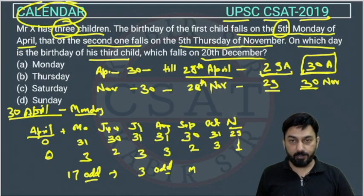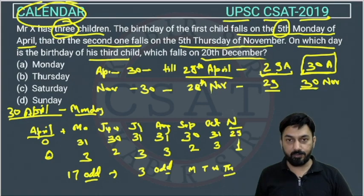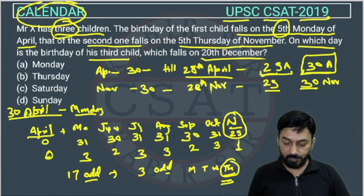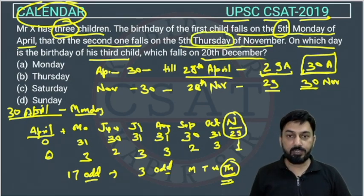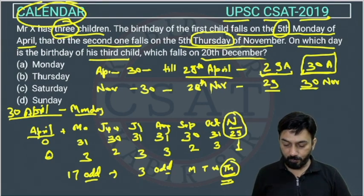We are on Monday, so we add 3 odd days: Tuesday, Wednesday, Thursday. So on 29th November there will be Thursday. This matches the information given by the question — the second child's birthday falls on the fifth Thursday of November, which is 29th November.